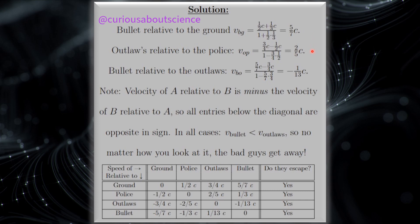The outlaws relative to the police, we use Einstein's velocity rule again, and we have to be careful because the relatives are not in the same direction, so we're going to minus. Then naturally, the bullet relative to the outlaws. Again, be careful with the signage.